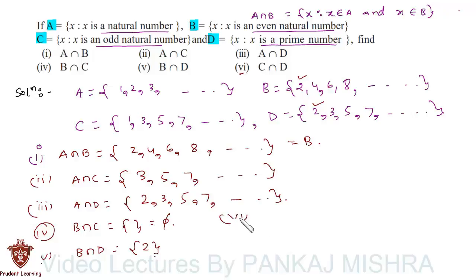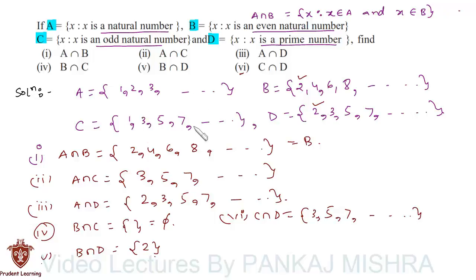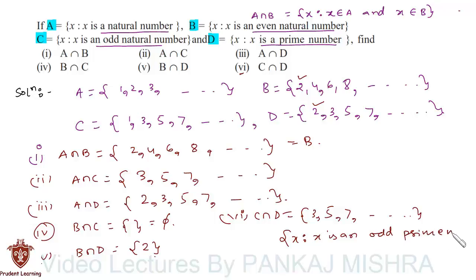Finally, in the last section, we have to find C intersection D — the common elements between set C and set D. Except 1 and 2, all the remaining elements are common in set C and set D. We can write this in set-builder form as the set of x such that x is an odd prime number, since all these elements are odd prime numbers. This completes our solution.